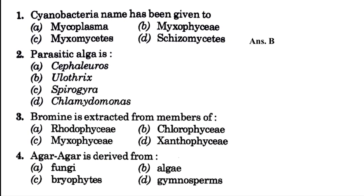Parasitic algae is — blank. Here we have some examples like Cephaleuros, Ulothrix, Spirogyra, Chlamydomonas, and the answer is option A, that is Cephaleuros. Then question number 3: bromine is extracted from members of — blank. Your options are Rhodophyceae, Chlorophyceae, Myxophyceae, Xanthophyceae, and the answer is Rhodophyceae.